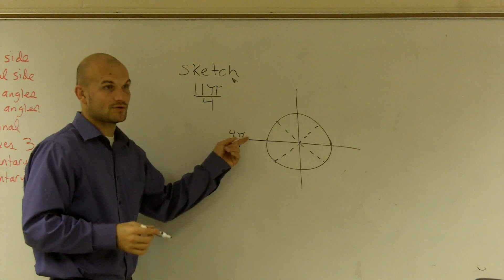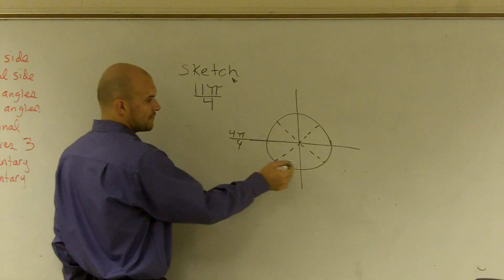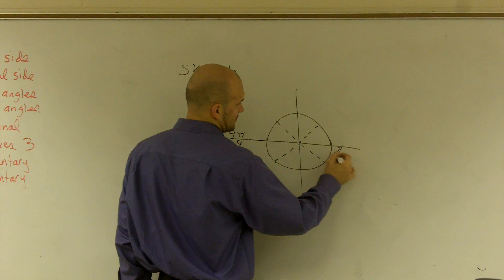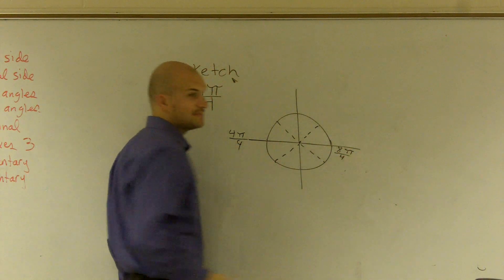Because remember, halfway around the circle is π, right? 5 fourths, 6 fourths, 7 fourths, 8 fourths. So 8 fourths π, which is the same thing as 2π.